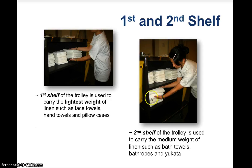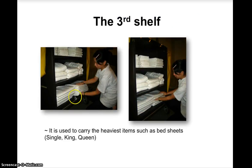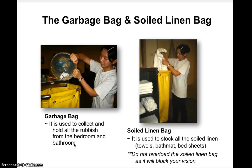The first shelf of the trolley carries the lightest weight linen such as face towels, hand towels, and pillowcases. The second shelf carries medium weight linen such as bath towels, bathrobes, and yukata. The third shelf carries the heaviest items such as single, queen, and king bedsheets. You should never overload the soiled linen bag as it will block your vision and does not look professional.